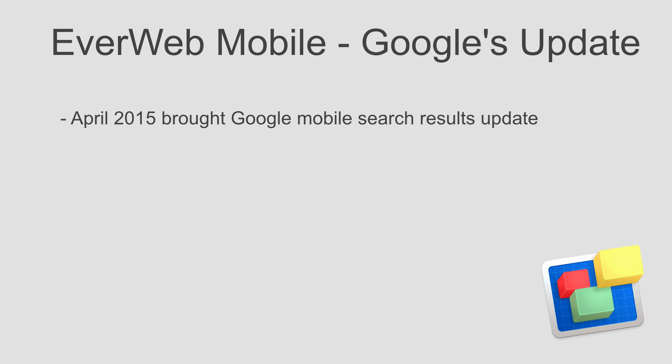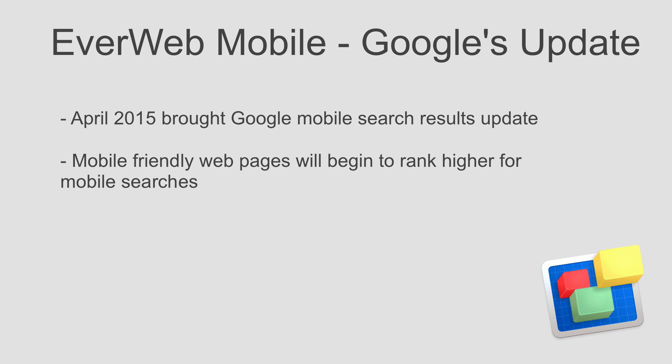This new change will alter the results shown in Google when users are searching Google on their mobile device. Web pages that are considered mobile-friendly will most likely begin to outrank pages that are not mobile-friendly. Google will also indicate to the searcher which of the pages in the results are mobile-friendly, which may increase the click-through rate for those pages.